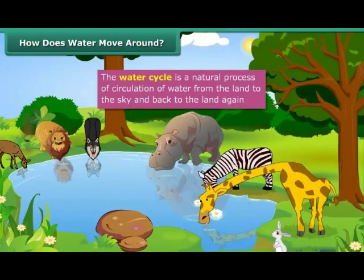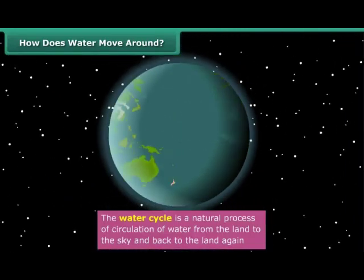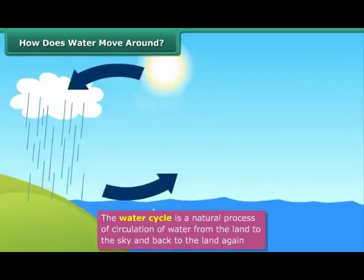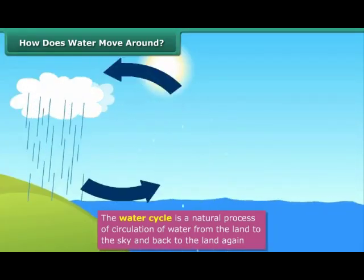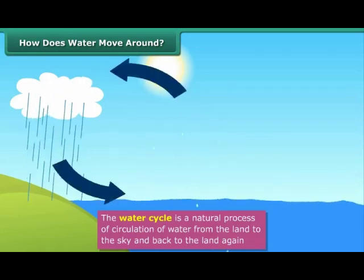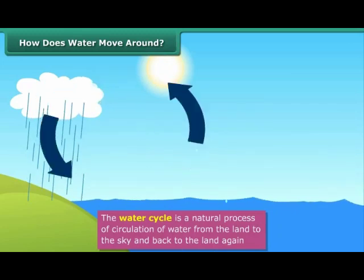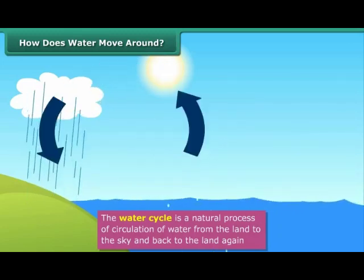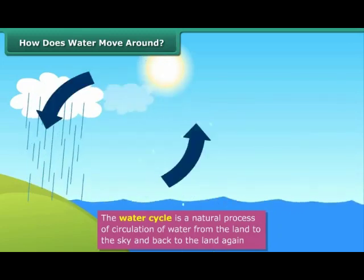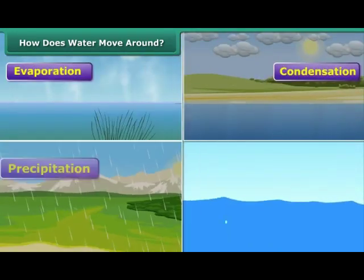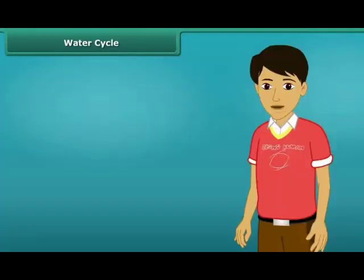Have you wondered how, despite consumption of water by living things on Earth for hundreds of years, the balance of water on the planet has been maintained? It is the water cycle which makes it possible. The repeated changing of water in nature from liquid to gaseous form and then back to liquid form is called the water cycle. There are four main steps in the water cycle: evaporation, condensation, precipitation, and collection.